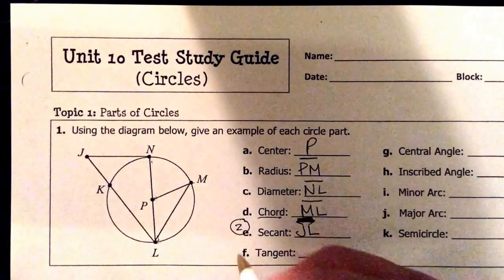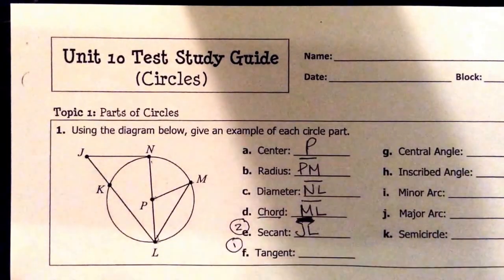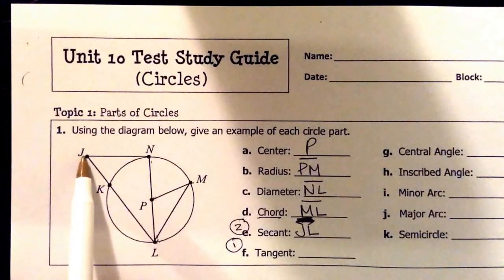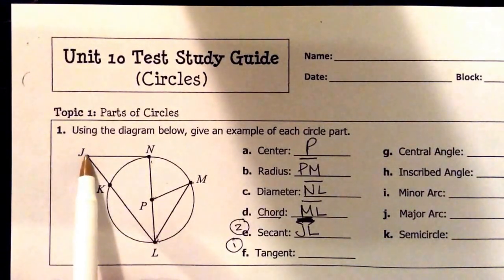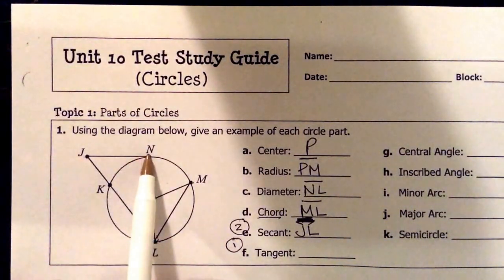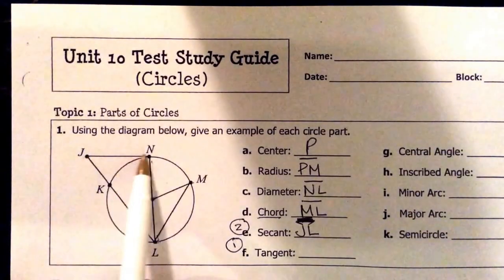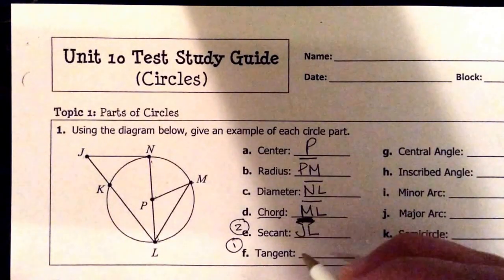A tangent is going to start outside the circle and it's going to touch the circle once. So if you look, our J is outside the circle, and if you trace from J to N, it only touches once. So we're going to go ahead and use JN as a tangent. The tangent point would be N.